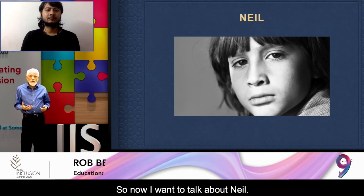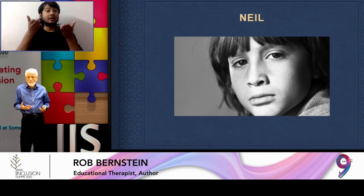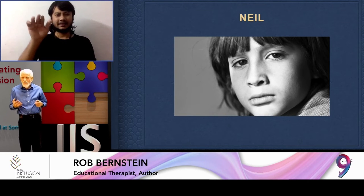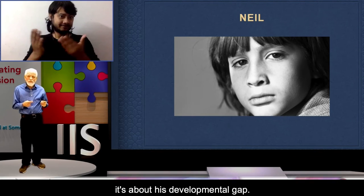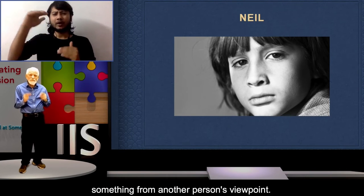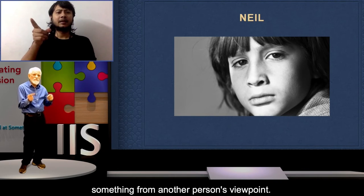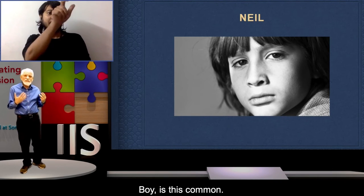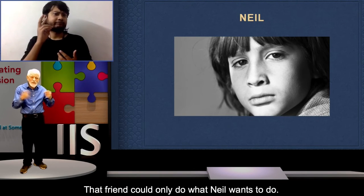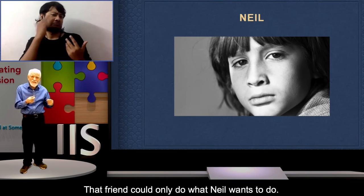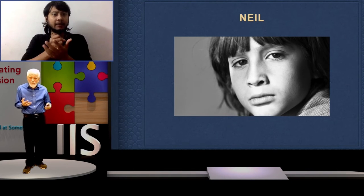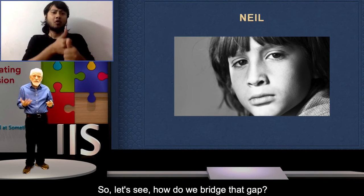Now I want to talk about Neil. Let's talk about his developmental gap — he doesn't recognize something from another person's viewpoint. This is very common. A friend comes over and can only do what Neil wants to do — very common with autistic kids. So how do we bridge that gap?